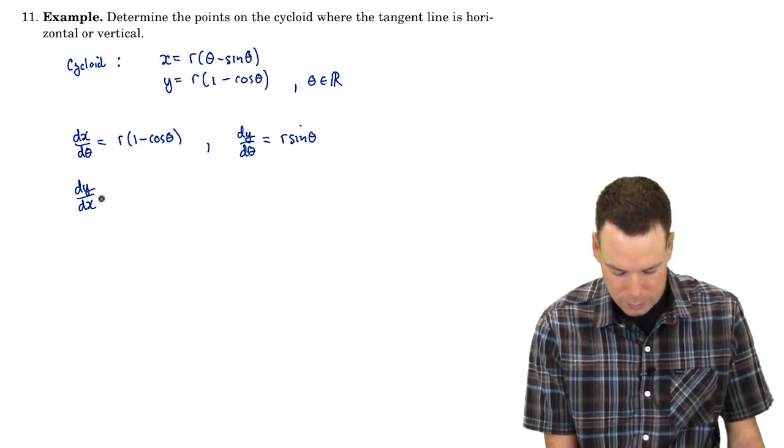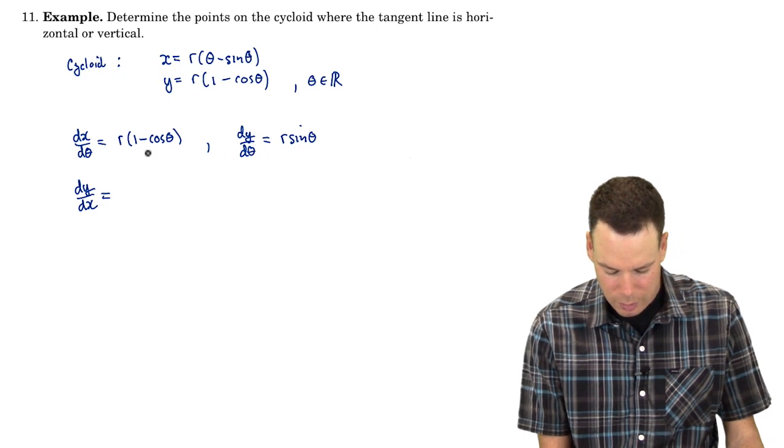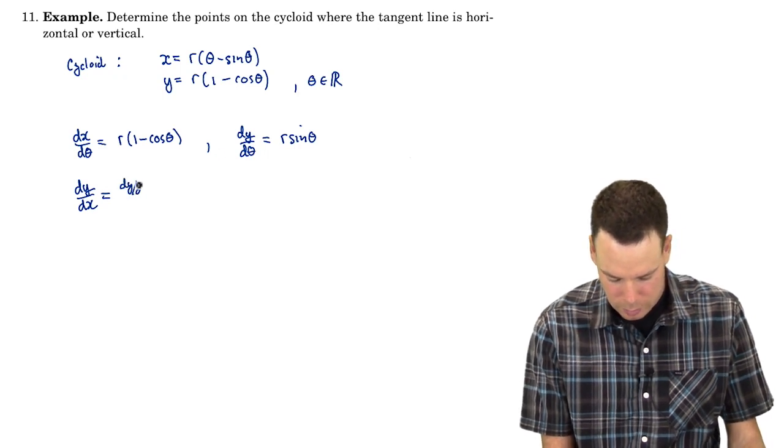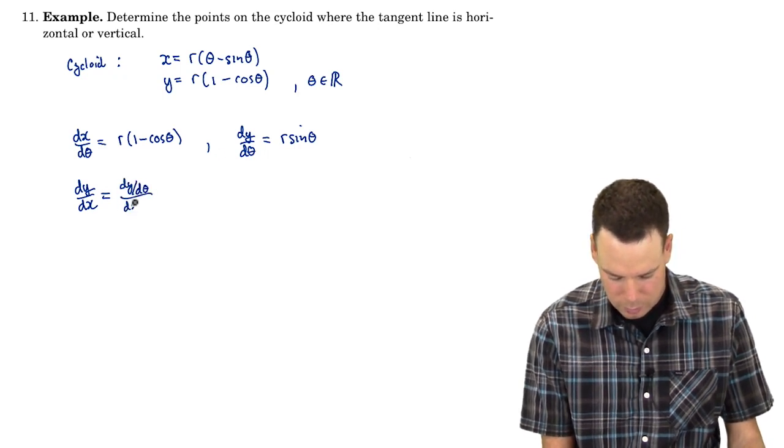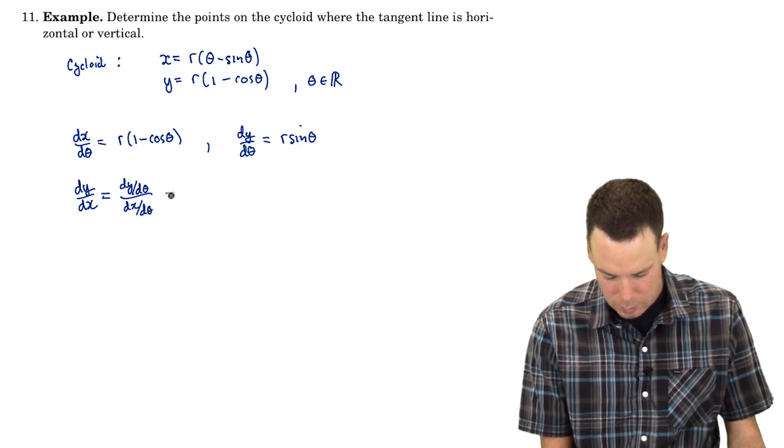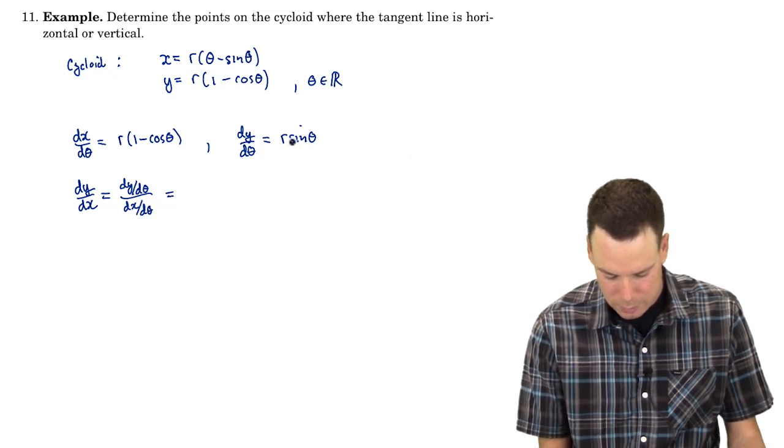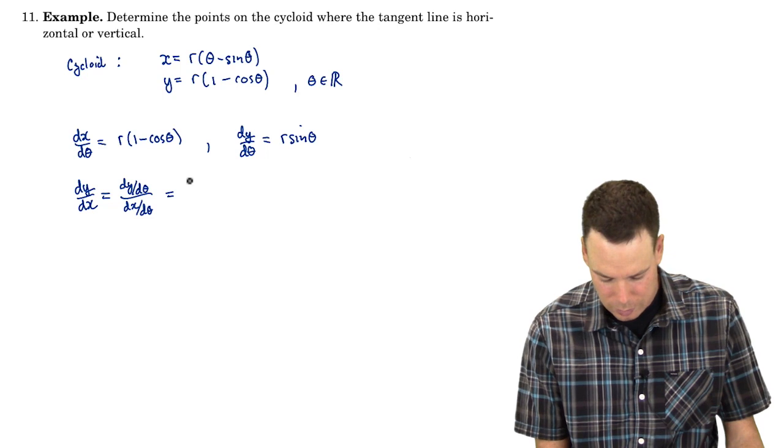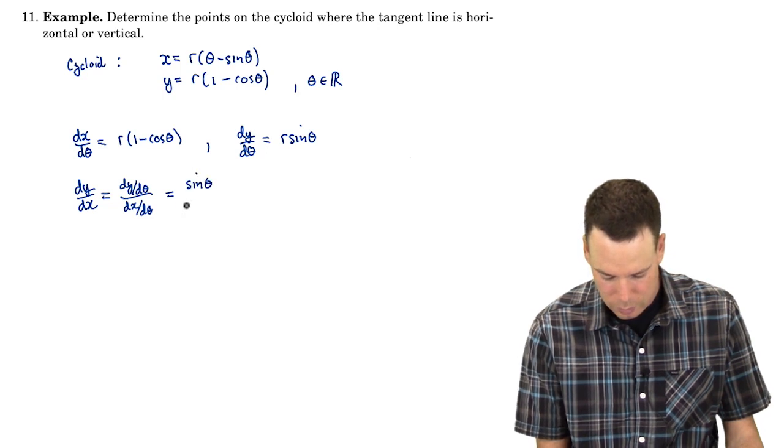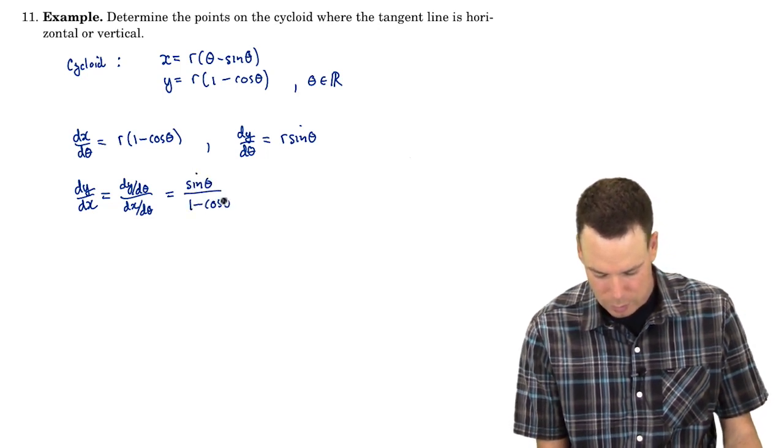So dy by dx is dy by d theta over dx by d theta. So that's r sine theta over r times 1 minus cos theta. The r's would all cancel and I get sine theta over 1 minus cos theta.